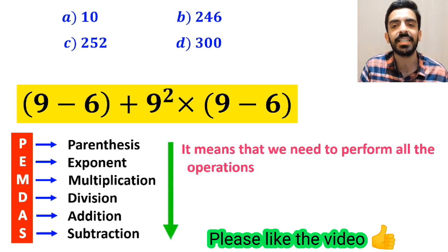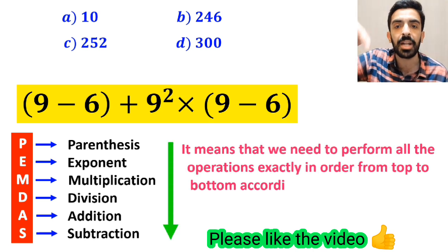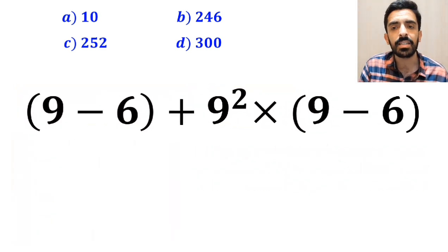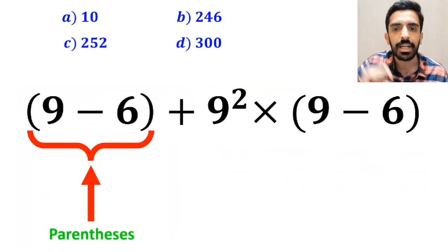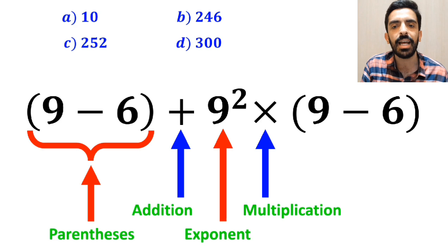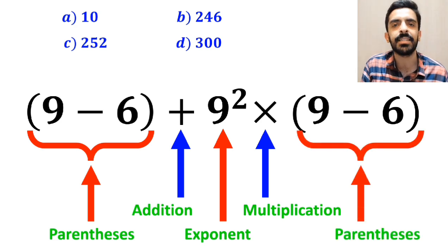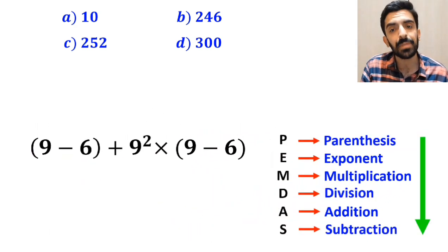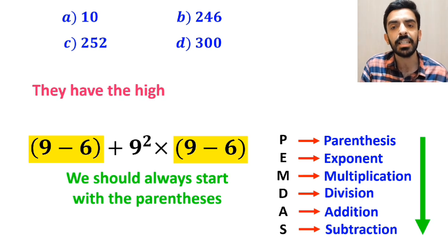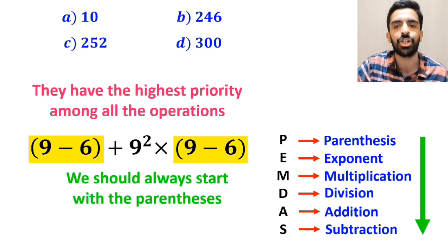We need to perform all the operations exactly in order from top to bottom according to PEMDAS. In this expression, first we have parenthesis, then an addition sign, followed by an exponent, then a multiplication, and finally another parenthesis. We should always start with the parenthesis since they have the highest priority.